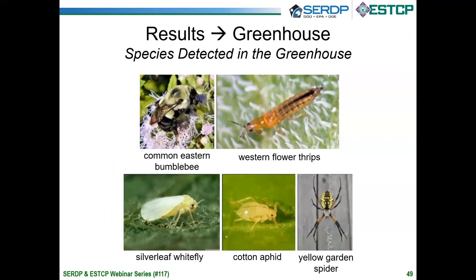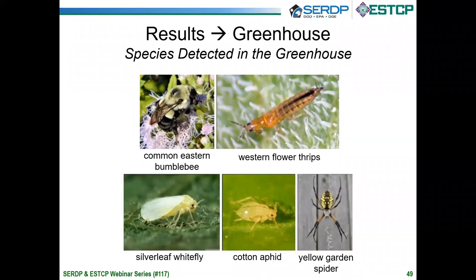The results show that yes, absolutely, microfluidic metabarcoding and eDNA allows us to detect pollinator species under controlled conditions. We did detect our common eastern bumblebee, which we had observed on flowers. In addition, we were given a list from greenhouse staff of invertebrate species known to occur in those greenhouses — and we detected those too. While we didn't observe them directly, we detected things like western flower thrips, silverleaf whitefly, cotton aphids, and yellow garden spiders. Things that were thought to occur but weren't directly observed were documented using this approach as well, giving us first insights into developing a complete picture of the pollinator community.